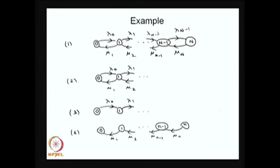Example 4 has all birth rates equal to 0. It is a finite model, but not all states communicate with all other states — therefore it is reducible, not irreducible. Whenever the system starts from some state other than zero, it can only move backward toward state 0 and will eventually be absorbed there.